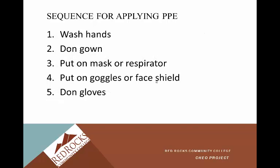The sequence for applying PPE — donning and removing a gown and gloves is one of your skills for the state test. First, wash your hands. Then don the gown. Next, put on the mask or respirator. Then put on goggles or face shield. And lastly, don the gloves.